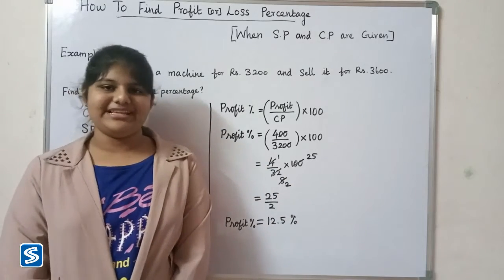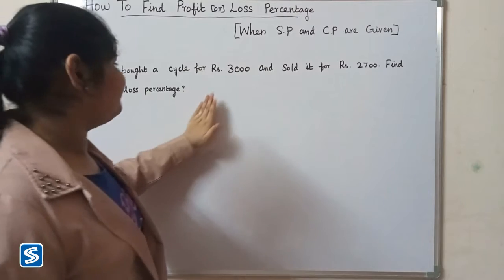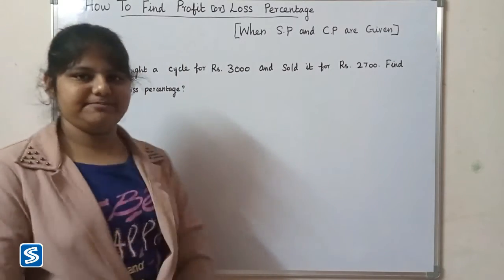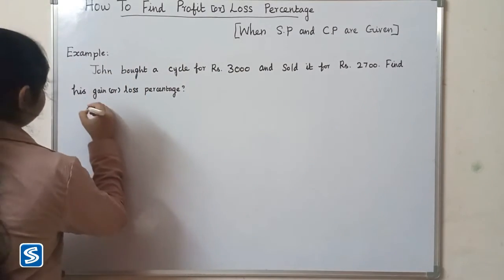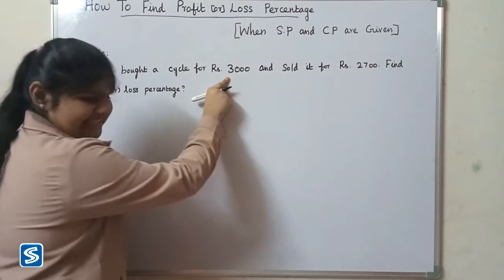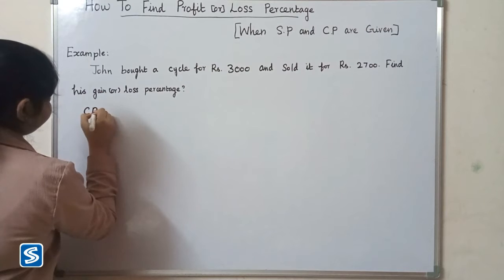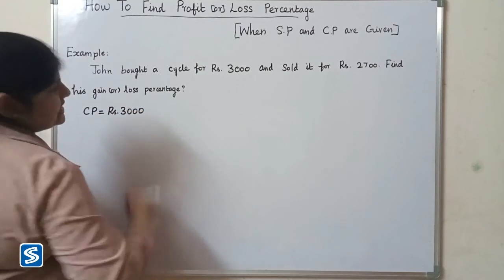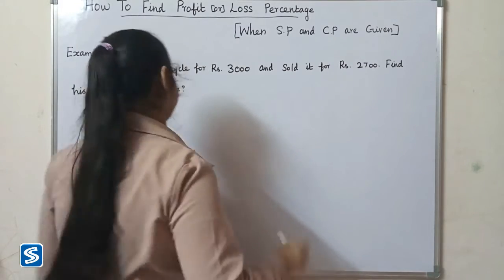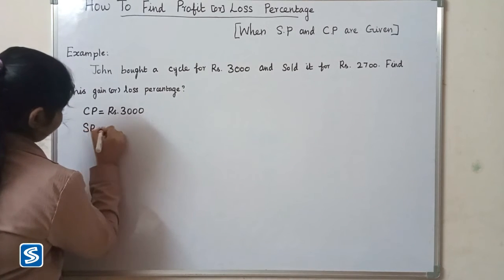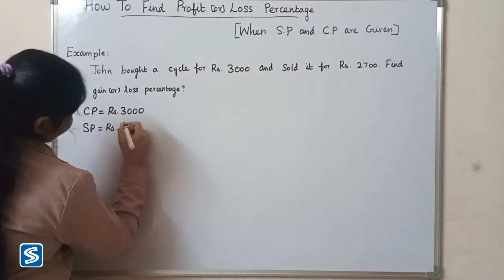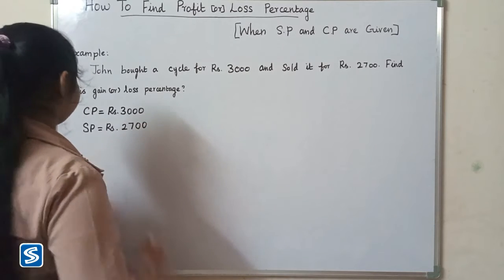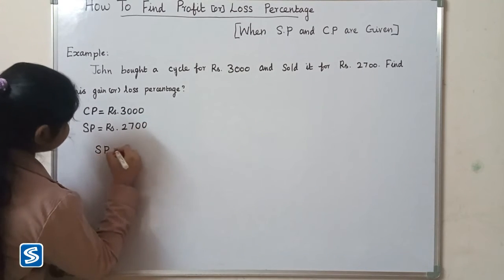Next we will take one more example. John got a cycle for rupees 3000 and sold it for rupees 2700. Find his gain or loss percentage. Here cost price is rupees 3000 and selling price is rupees 2700. Since selling price is less than cost price, John had a loss.